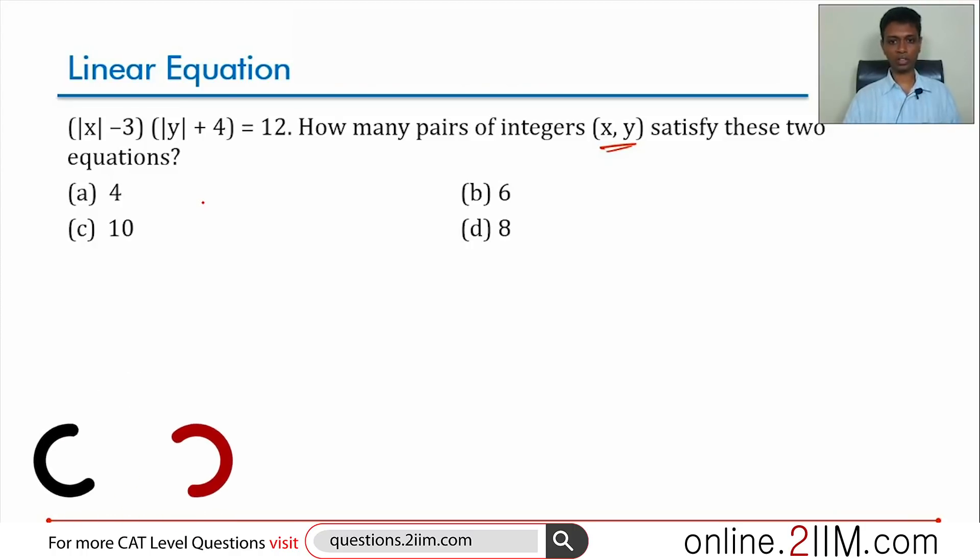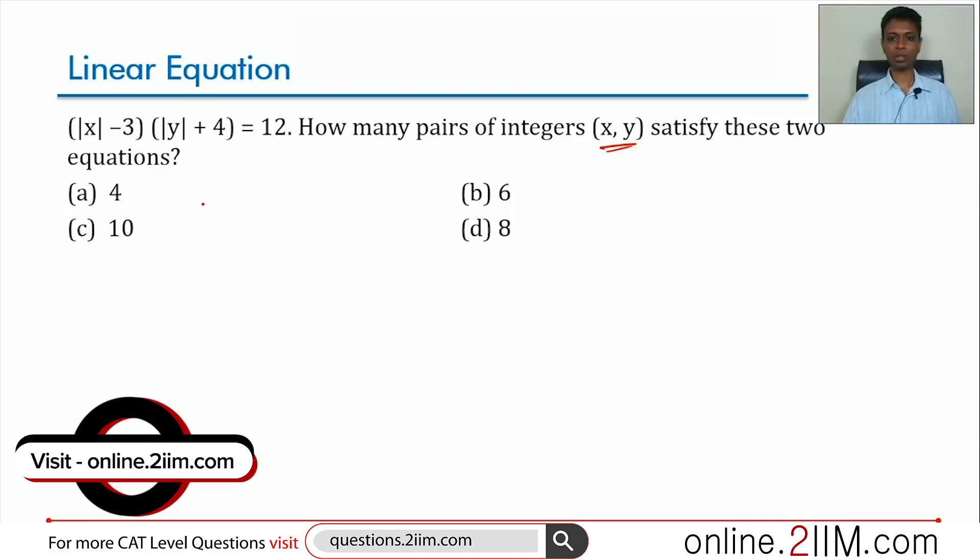|x| and |y| are integers. Furthermore, when x and y are integers, |x - 3| and |y + 4| are integers. On top of that, we can see that |y + 4| is positive. The only way we can get 12 is positive into positive.